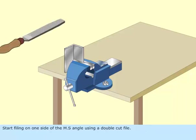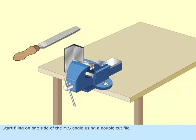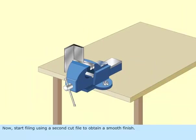Start filing on one side of the MS angle using a double cut file. Now, start filing using a second cut file to obtain a smooth finish.